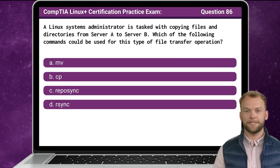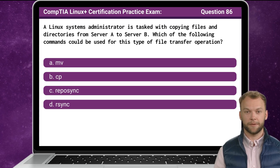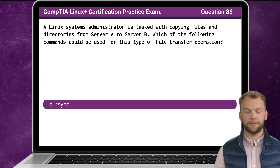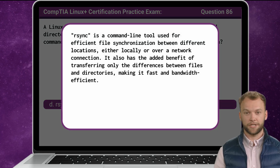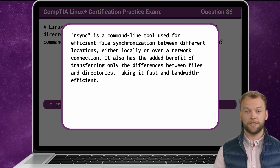Question 86. A Linux systems administrator is tasked with copying files and directories from server A to server B. Which of the following commands could be used for this type of file transfer operation? The answer is D: RSync. RSync is a command line tool used for efficient file synchronization between different locations, either locally or over a network connection. It also has the added benefit of transferring only the differences between files and directories, making it fast and bandwidth efficient.